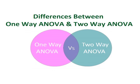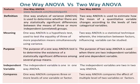Differences between one-way ANOVA and two-way ANOVA. One-way analysis of variance (ANOVA) is used to determine whether there are any statistically significant differences between the means of three or more independent, unrelated groups. Whereas two-way ANOVA is used to estimate how the mean of a quantitative variable changes according to the levels of two categorical variables.